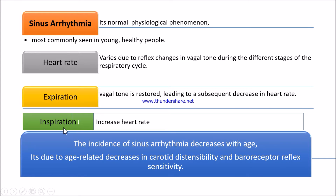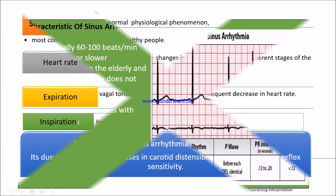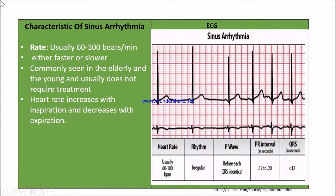The incidence of sinus arrhythmia decreases with age. This is due to age-related changes that affect carotid distensibility and baroreceptor reflex sensitivity, which is why a patient may have sinus arrhythmia. Let's see about the sinus arrhythmia ECG and its characteristics.